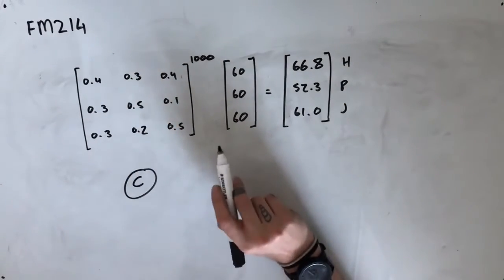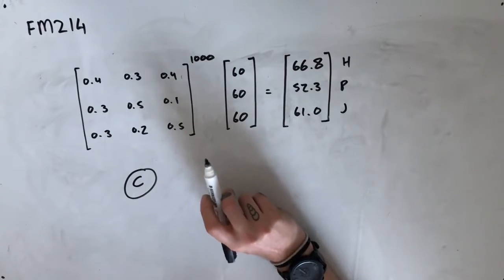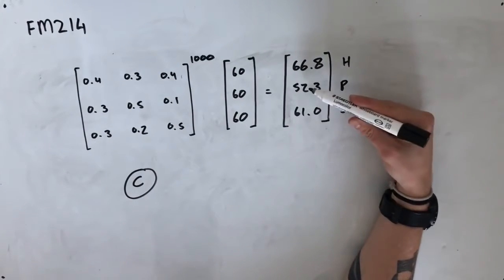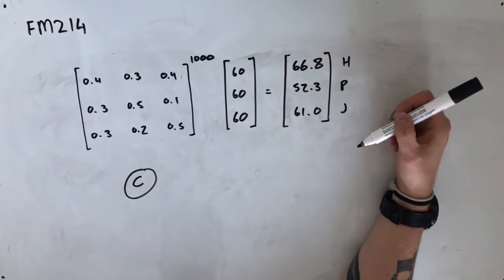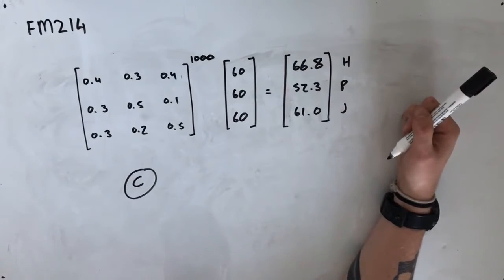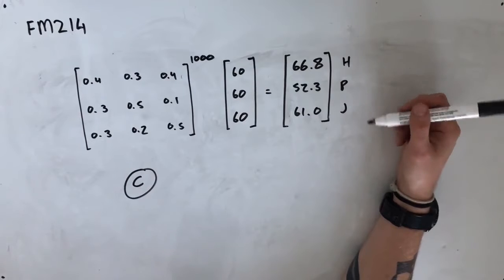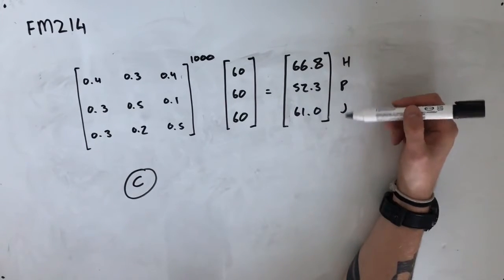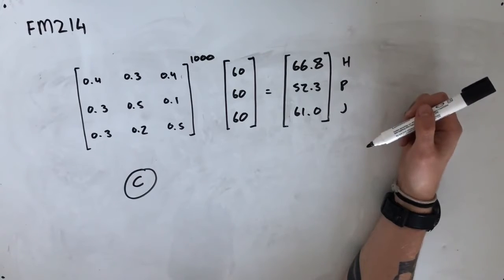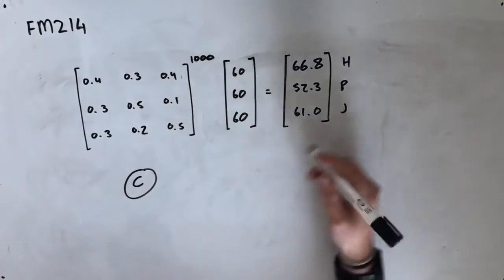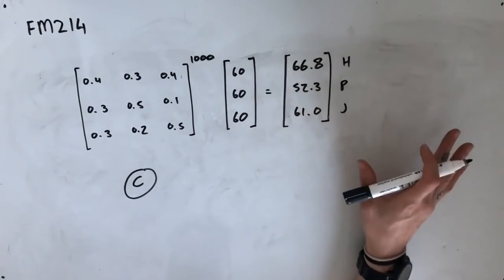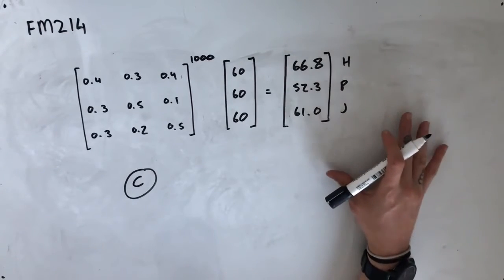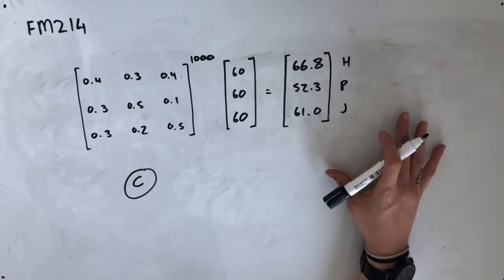Option D says more employees will choose peanut butter sandwiches than jam sandwiches — peanut butter has 52.3 and jam has 61.0, so that's not true. Option E says ham will be the least popular sandwich — ham is definitely not the least popular, it is the most popular. So C is our correct answer, and that's that question. If you guys have any questions, please leave them in the comments below. Otherwise, I'll see you in the next video.